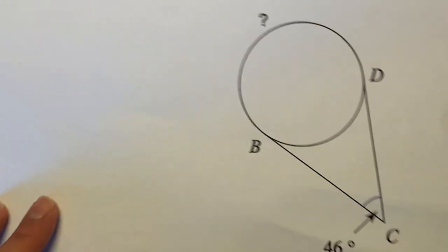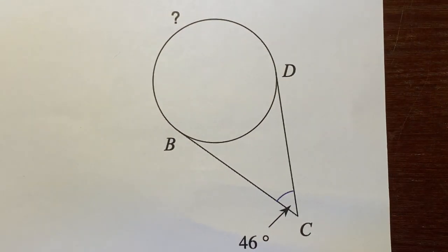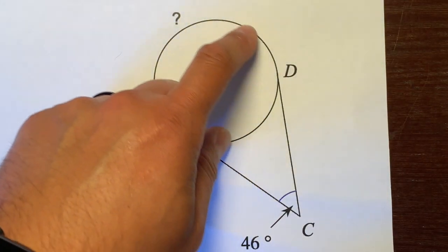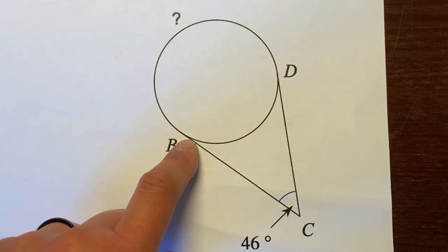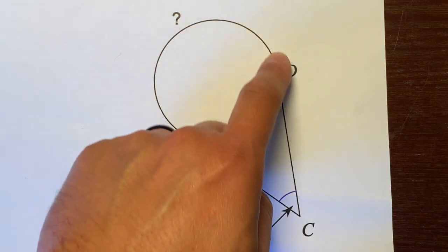The question is asking, what's the measure of this arc right here? From this point of tangency to this point of tangency.